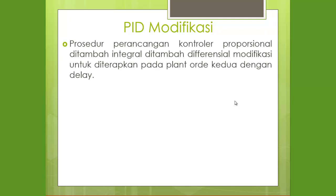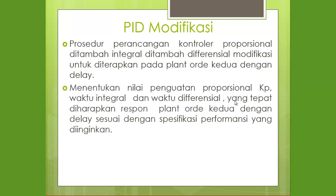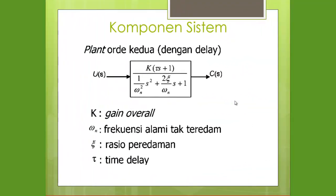Berikutnya adalah PID Modifikasi. PID Modifikasi merupakan PID perbaikan dari PID sebelumnya. Prosedur perancangan kontrol PID Modifikasi diterapkan untuk plan order kedua dengan delay. Nanti menentukan penguatan proporsional KP, waktu integral, dan waktu diferensial yang tepat, sehingga respon plan order kedua dengan delay sesuai spesifikasi. Bentuk plan order kedua dengan delay: K × e^(-Ts) / (1/ωn²·s² + 2ζ/ωn·s + 1), di mana K adalah gain overall, ωn adalah frekuensi alami redaman, ζ adalah rasio redaman, dan T adalah time delay.